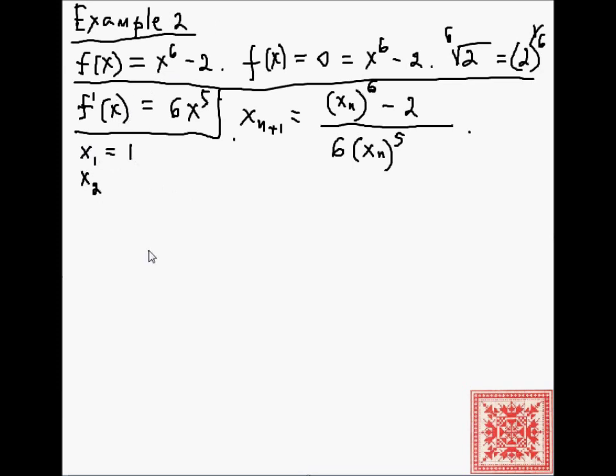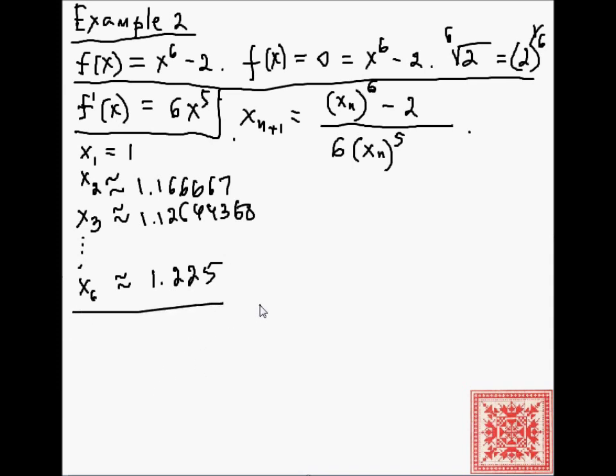So, for example, if we start from 1, the second guess will come out to be 1.166667. And the third guess is approximately 1.12644368. And then the sixth guess is approximately 1.225. So, that's the approximate value of the sixth root of 2.